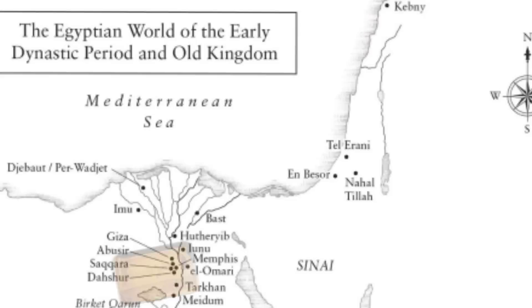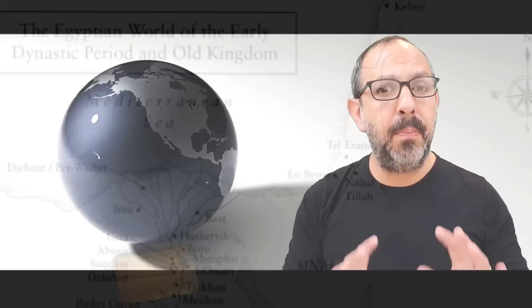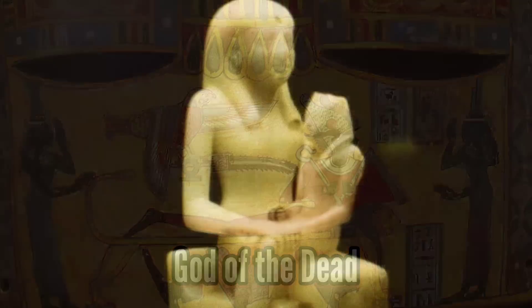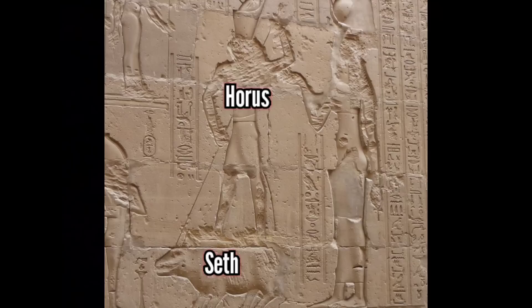In grief, Isis went on a long journey looking for the coffin, found it in Byblos, and brought it back to Egypt for a proper burial. But before the burial could take place, Seth found the body, cut it into 14 pieces, and scattered them across the Nile. Isis went on a long journey again, found all the pieces except for the phallus. So Isis reconstructed an artificial phallus, put Osiris back together, and resurrected him long enough to become pregnant by him. When Osiris died again, he became the god of the dead. Isis then gave birth to Horus, who ruled in Osiris's place. Then Horus and Seth fought — Horus loses an eye, but it's regenerated, and Seth is finally defeated, but not killed.